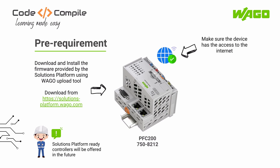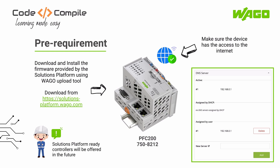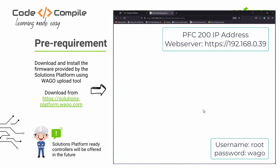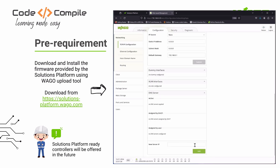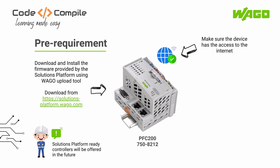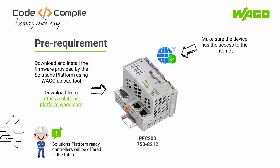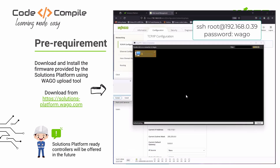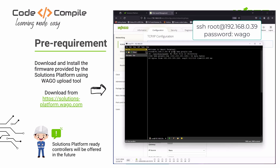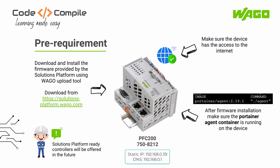Once the firmware is transferred, make sure your controller has access to the internet. To enable internet access, check and assign the DNS server IP address in the TCP/IP configuration, which you can access by logging into the controller's web server. I'm going to write my gateway address as my DNS server address. If you don't know your controller IP address, you can reset the controller, which will temporarily set the IP address of bridge 1 to 192.168.1.17, and then connect to further define IP addresses of your choice. In my case, my controller has a static IP and the DNS server is already configured. I can log in via SSH and ping a web link — on getting a response, I can confirm my device has internet access. Finally, ensure you have a Portainer agent running on the device.